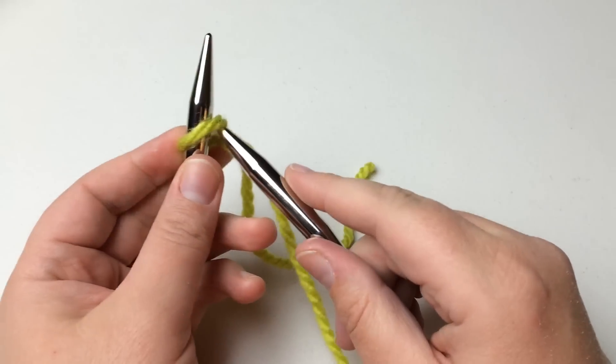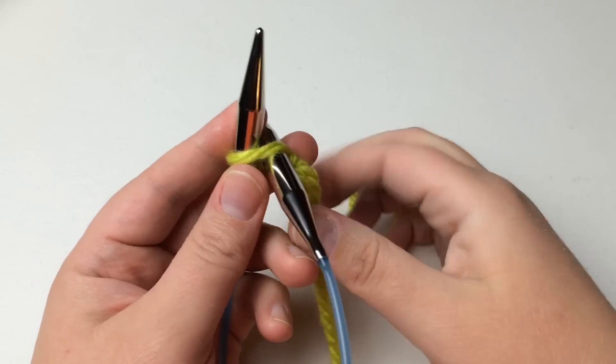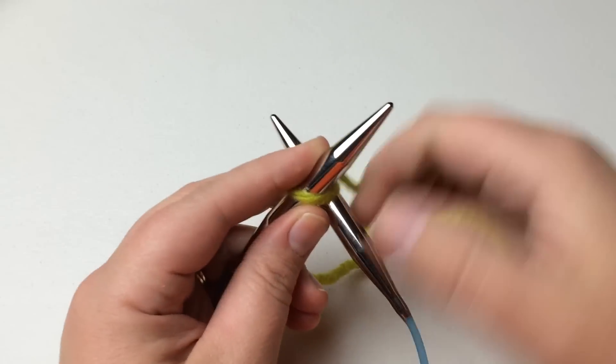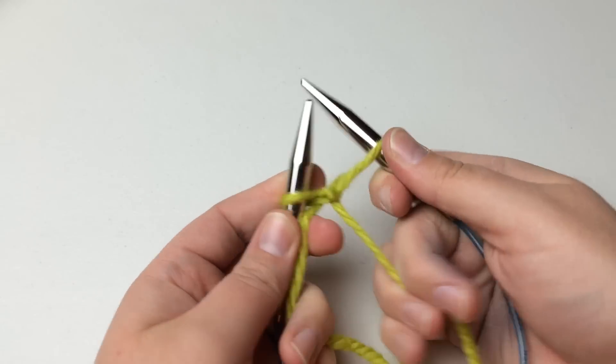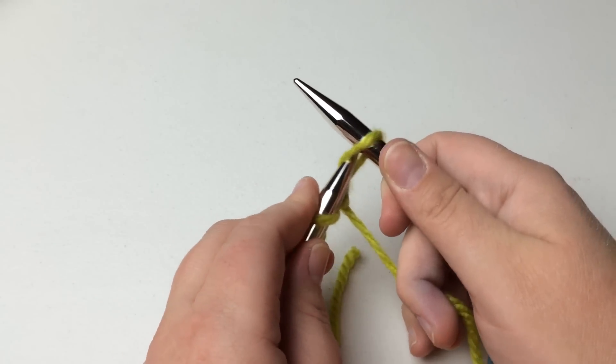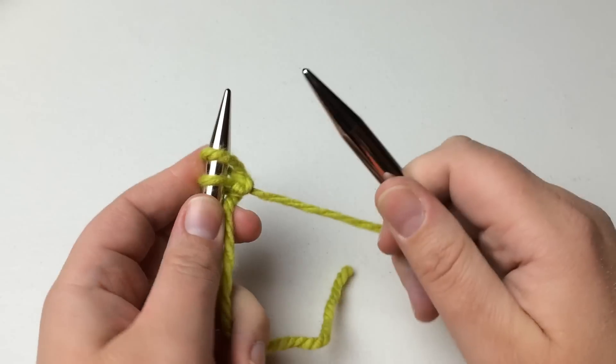Put the right needle through the loop. Make sure it's not too tight. You're going to knit this stitch and don't drop it. Take it and twist it like this and put it in and slide it in.